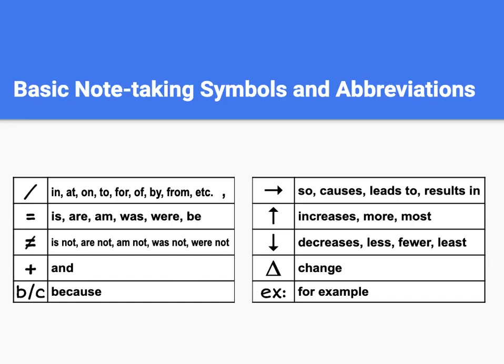So let's review our basic note taking symbols and abbreviations. The purpose of these symbols and abbreviations is to help us write more concise notes. We want our notes to be short and to help us write faster. So here we have a backslash to represent our prepositions such as in, at, and on, but also our comma. We can use an equal sign to represent the different forms of the verb be, like is, are, and am.